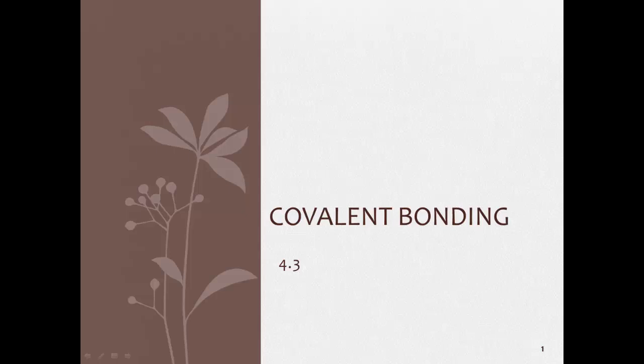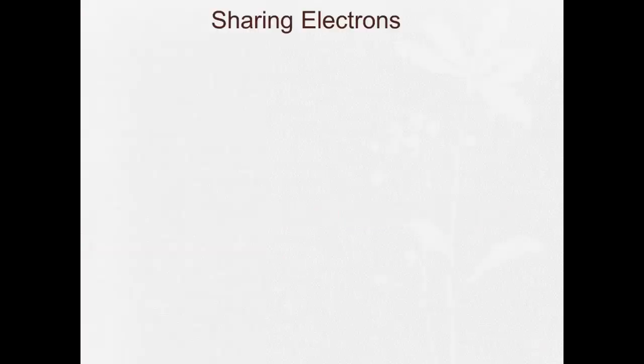All right, here we go with 4.3, covalent bonding. Things to remember about covalent bonding: unlike ionic, which electrons are transferred, covalent bonding is all about sharing electrons. Covalent bonds tend to be formed when two nonmetals form a bond, and they share electrons so that both atoms in the bond have a full outer shell.